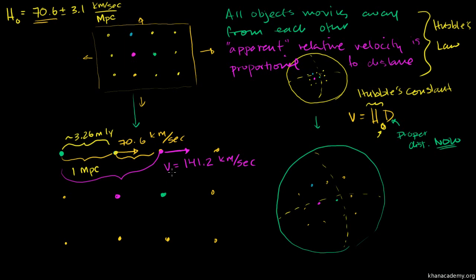How did Hubble know these objects were moving away from each other? If you observe the redshift of one object moving away at 70.6 km/s and another at 141.2 km/s, then you also know those two objects are moving away from each other at 70.6 km/s. Even though a megaparsec is further than the Andromeda galaxy — the nearest large galaxy to us — we're talking about hundreds of billions of galaxies in just the observable universe.